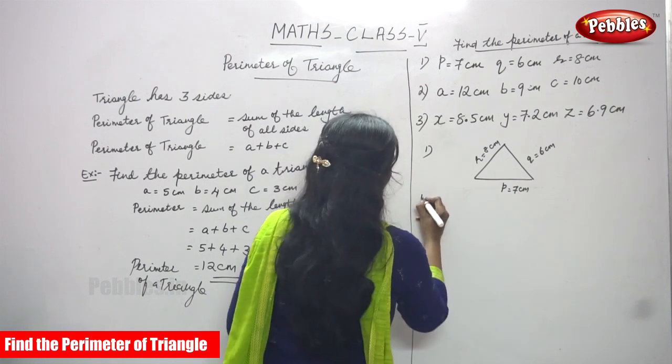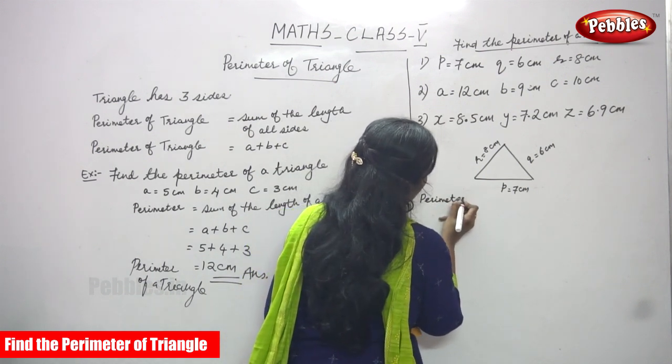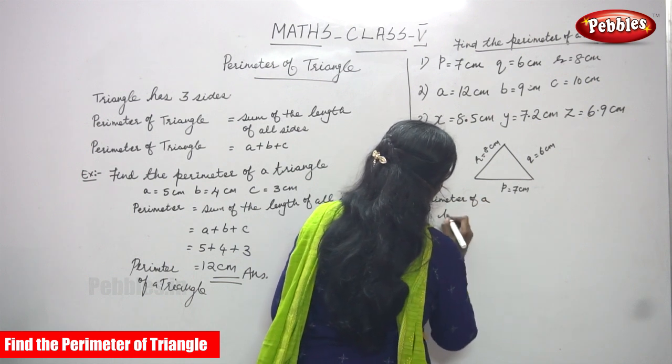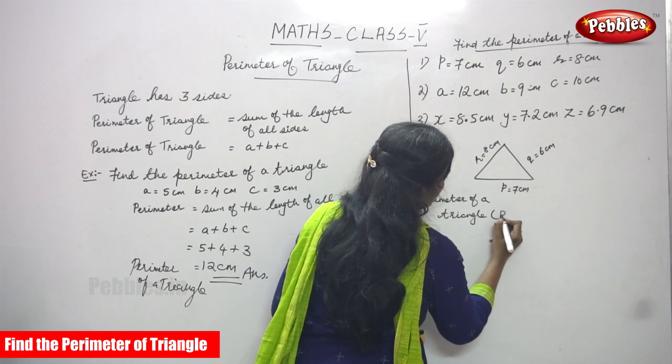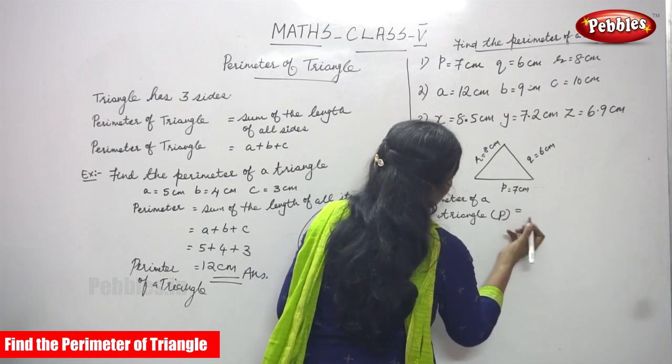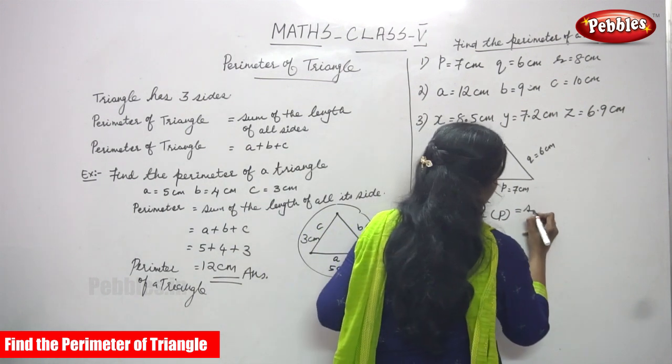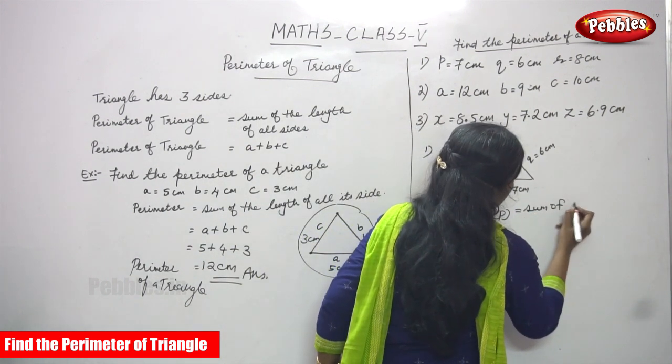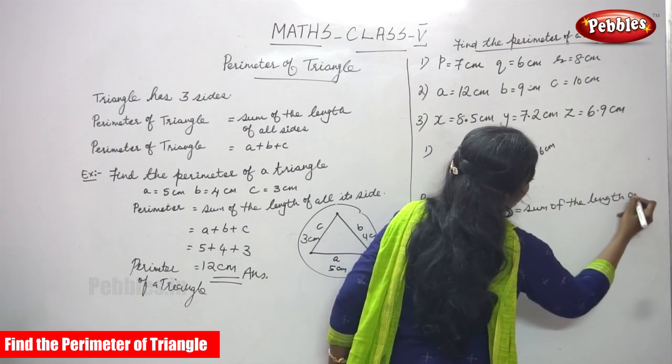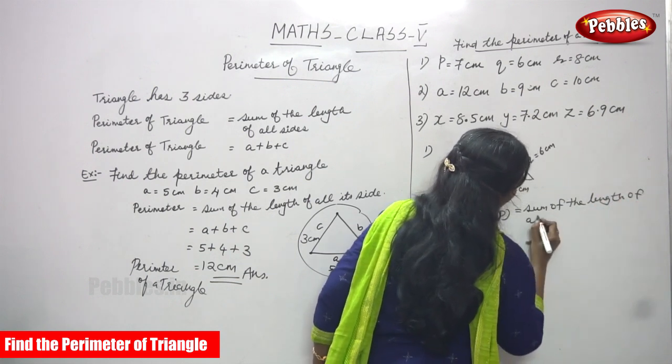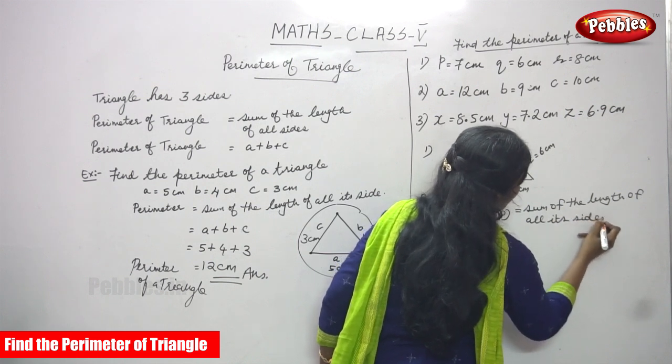So, perimeter of a triangle. Perimeter of a triangle - that means P represents perimeter of a triangle. So we have to write that is sum of the length of all its sides. This is the formula you have to write always.